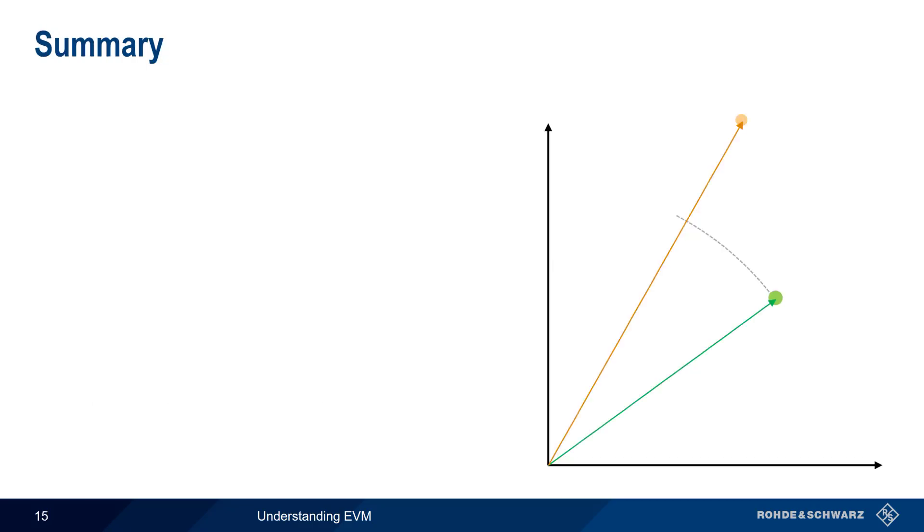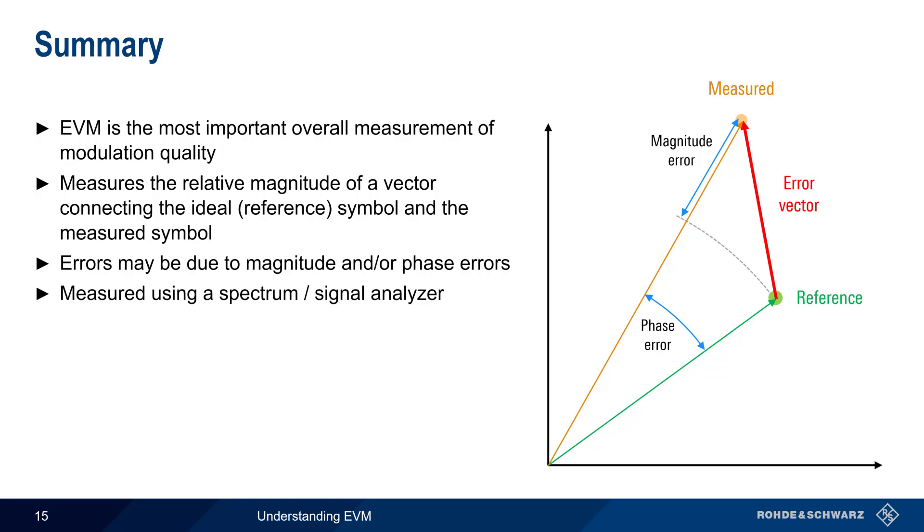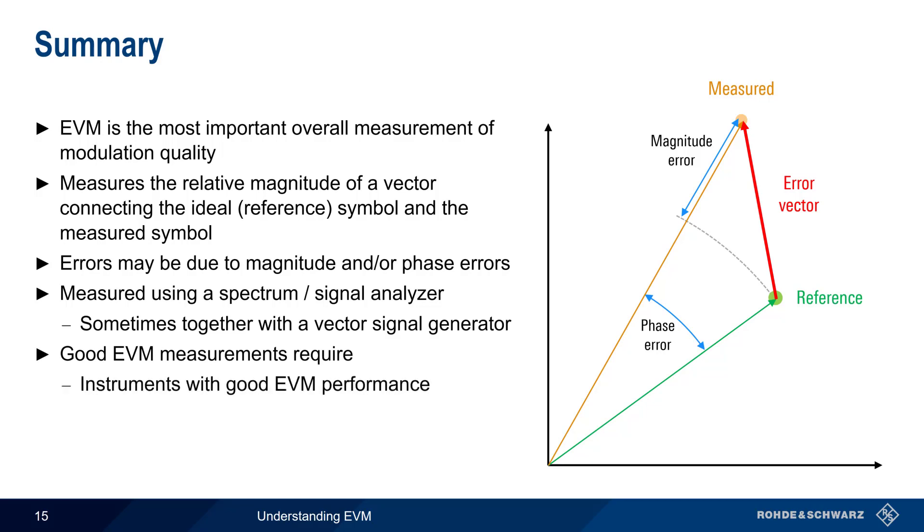So let's summarize what we've covered. Error vector magnitude, or EVM, is one of the most important measurements of modulation quality. As the name implies, EVM measures the relative magnitude of an error vector that connects the ideal or reference symbol and the actual received or measured symbol. Note that errors may be caused by magnitude and/or phase errors. EVM is most often measured using a spectrum analyzer, sometimes in combination with a vector signal generator. Good EVM measurement results require several things, including instruments with good EVM performance, correct setting of the reference level, and an appropriate number of average measurements.